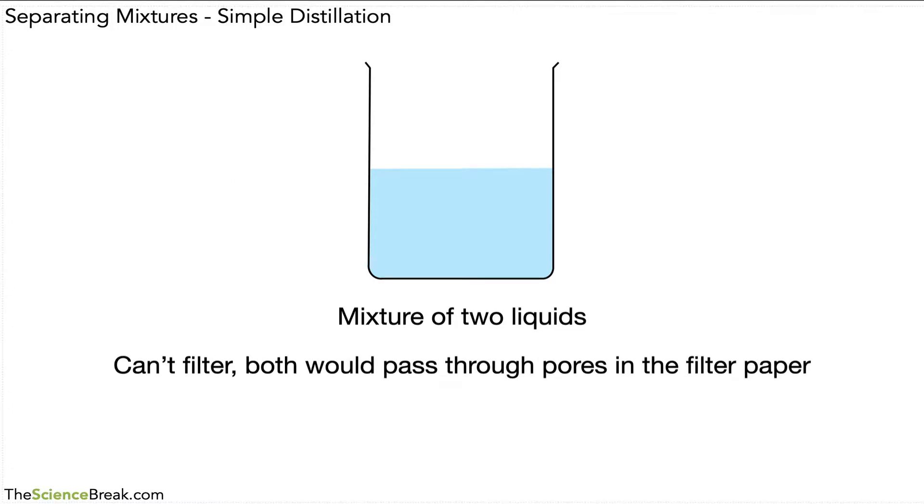We could filter the mixture, but both would pass through pores in the filter paper. You could evaporate off the different liquids, but you would probably lose both of those liquids. So what do we do?